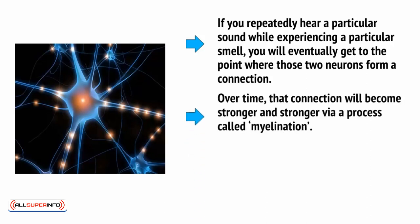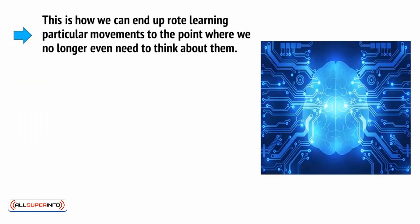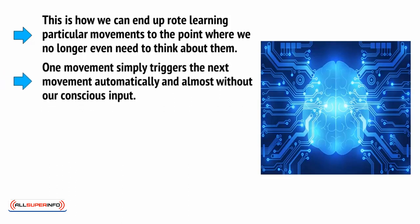Over time, that connection will become stronger and stronger via a process called myelination. Essentially, the axons and dendrites involved in the connection become better insulated, which strengthens the circuitry and makes it easier for one neuron to cause the other to fire. This is how we can end up rote learning particular movements to the point where we no longer even need to think about them. One movement simply triggers the next movement automatically and almost without our conscious input.